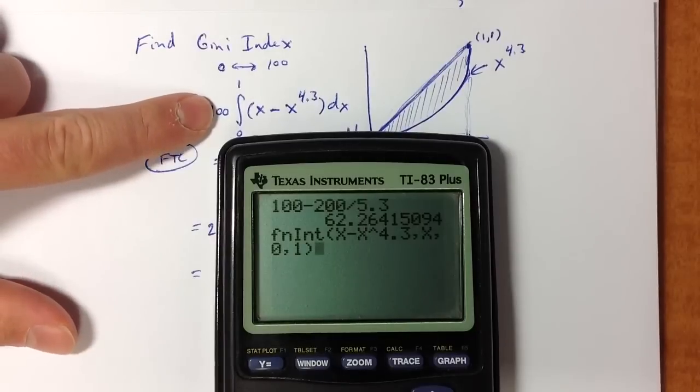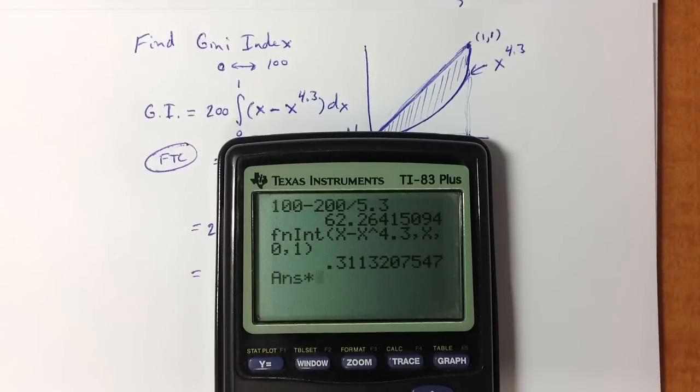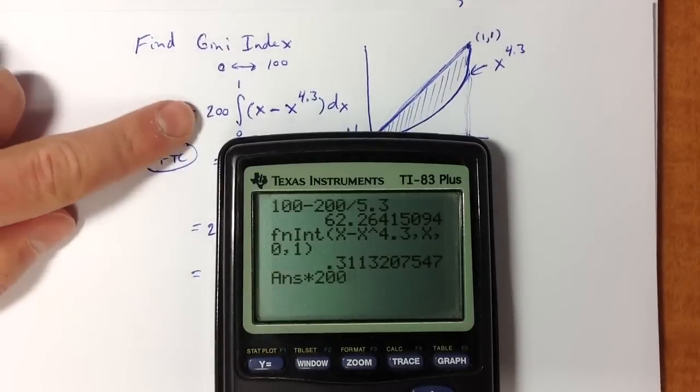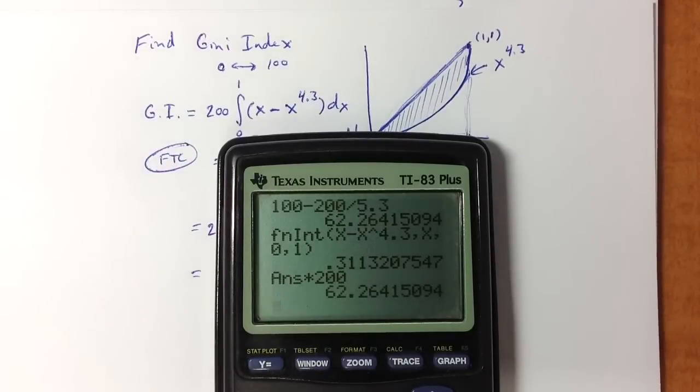So using the function integration command, we can evaluate the integral. But then, of course, to get the final answer, I want to multiply that by 200 for the Gini index calculation. And we get that same 62.3 value.